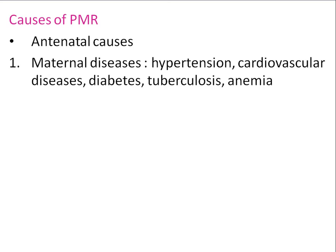Further antenatal causes: diabetes — the mother should be on insulin therapy throughout the antenatal period; tuberculosis — treat completely before pregnancy; anemia — treat with iron folic acid tablets, anti-malarials for malaria, and deworming for worm infestation. Pelvic causes include uterine myoma, endometriosis, ovarian tumors, uterine anomalies, and incompetent cervix. If incompetent cervix is diagnosed, cervical cerclage can prevent premature delivery and perinatal mortality.